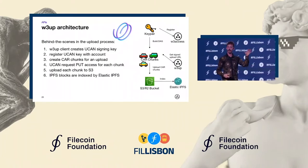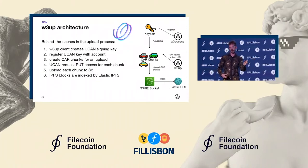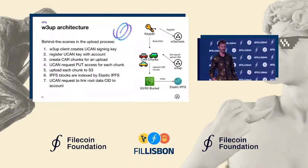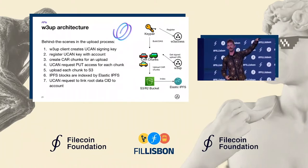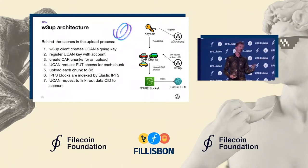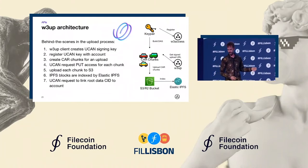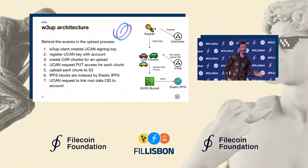The fun part is those files sit in the buckets and Elastic IPFS — our web-scale IPFS peer implementation — indexes the blocks as they sit in the buckets and provides them over Bitswap and to the gateways. The last step is telling Web3 Storage to bookmark your upload under a given CID. We don't know which blocks in a CAR file you consider the root of your data structure, and it could be more than one, so we allow you to bookmark those CIDs for later use in your account.